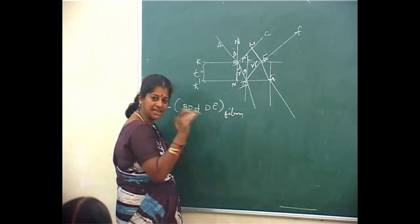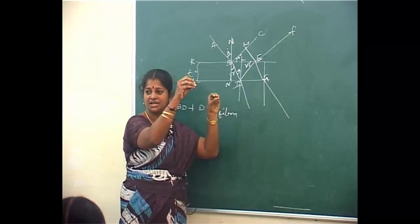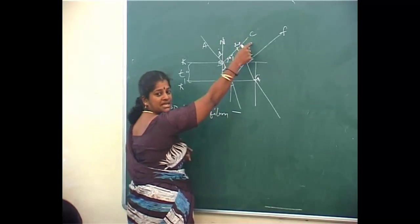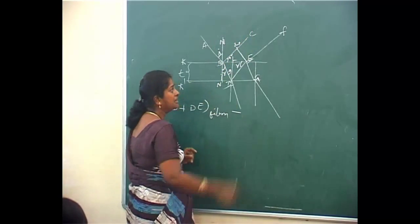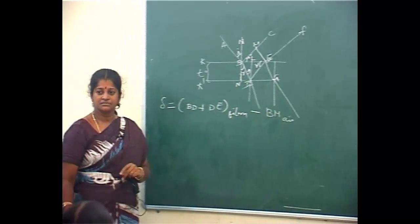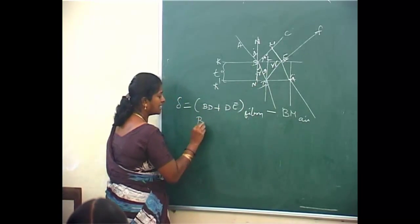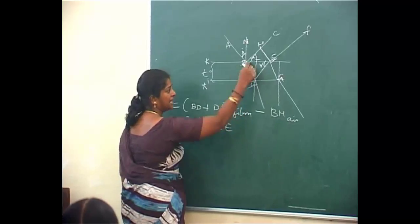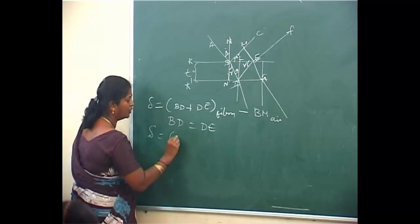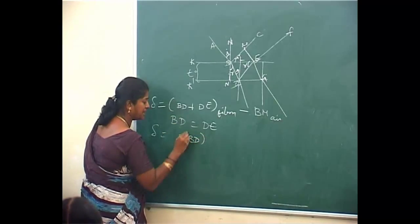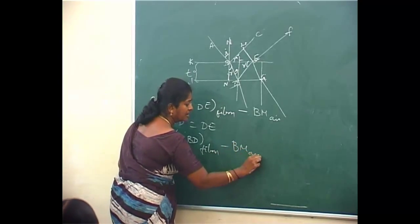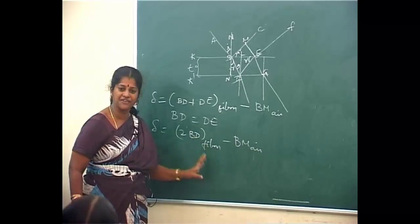This is an extra path travelled, minus the extra path travelled by the ray BC outside the medium. So it is minus BM, where it is travelling in air. BD and DE — can you see they are equal? So I can write delta to be equal to 2BD in film minus BM in air. This quantity is in air; this quantity is in film.